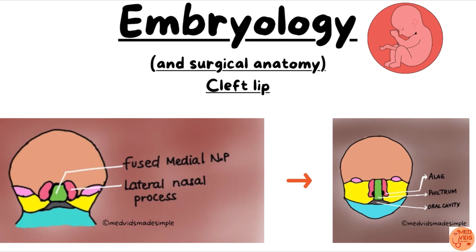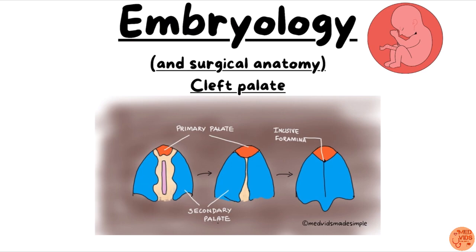Now let's talk about the embryology of palate formation. The hard palate is formed from two structures: the primary palate and the secondary palate. Anteriorly, the primary palate is formed, and from the two sides there are shelf-like projections called the secondary palate. These three structures fuse together. The junction where the primary palate and the secondary palate from both sides meet has a foramen called the incisive foramen.